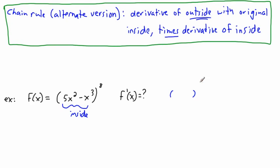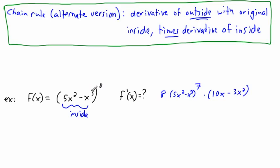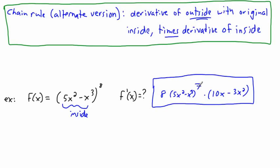The derivative of the outside — some junk to the power of eight — is 8 times that junk to the power of seven. Putting the original inside in: 8 times (5x² − x³)⁷. Then multiply by the derivative of the inside: the derivative of 5x² is 10x, and the derivative of x³ is 3x², so we get 10x minus 3x².